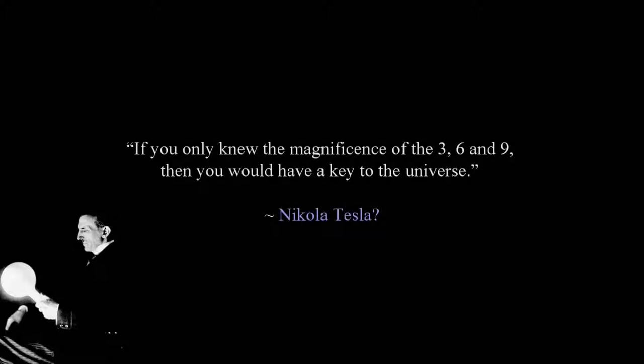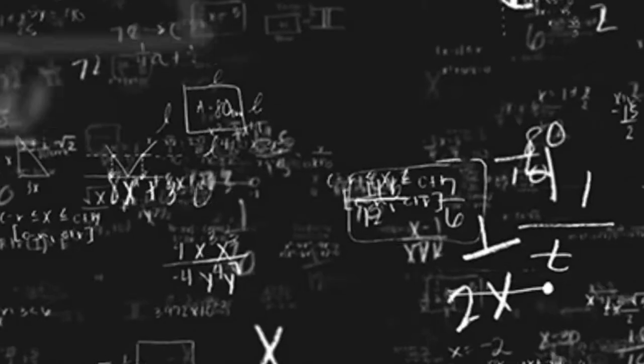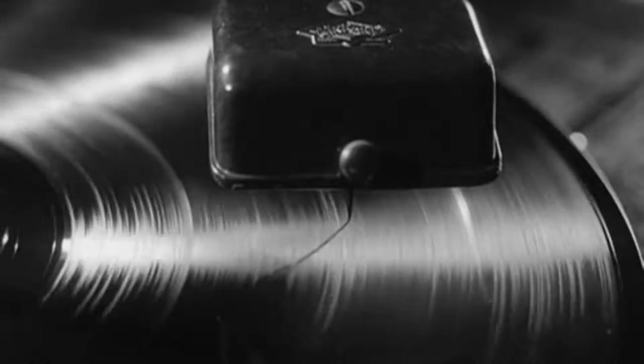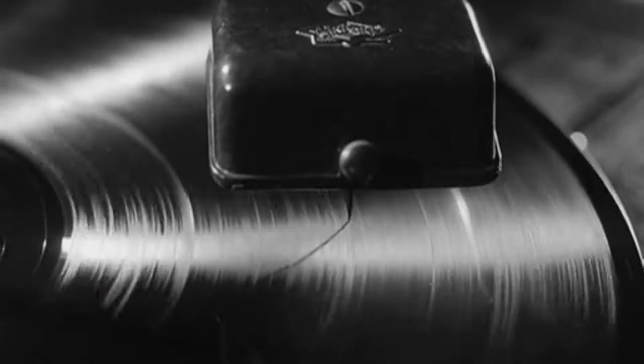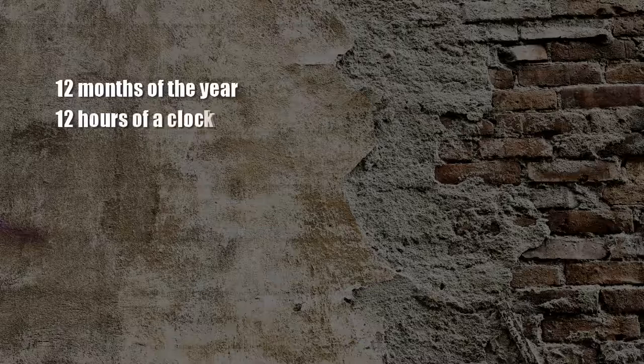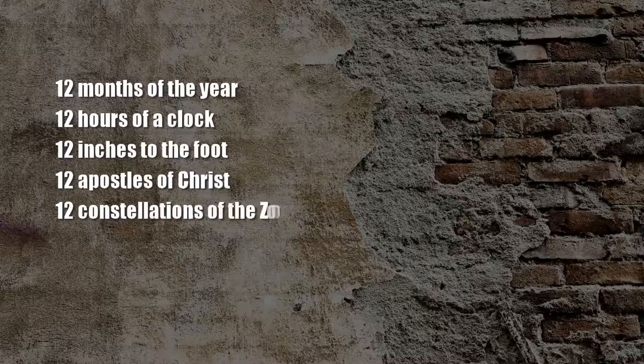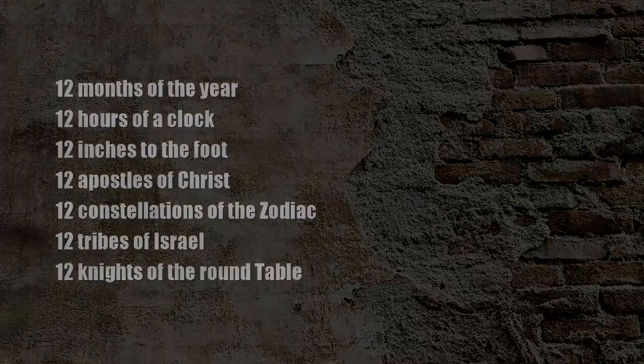If you only knew the magnificence of the 3, 6 and 9, then you would have a key to the universe. We have been left a method of counting and measurement, and the importance of dividing a unit by twelve seems to be the main rule given that has been adopted by humanity. Here are some of the ways that I've found twelve to be an important number: Twelve months of the year, twelve hours of a clock, twelve inches to the foot, twelve apostles of Christ, twelve constellations of the zodiac, twelve tribes of Israel, twelve knights of the round table, and there's much more.